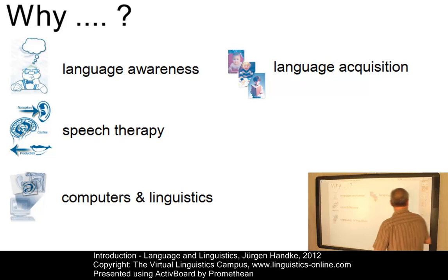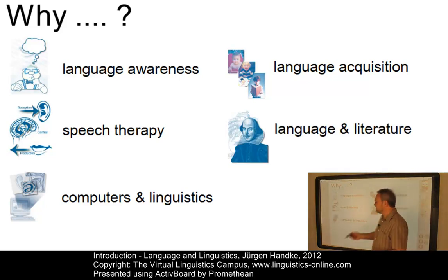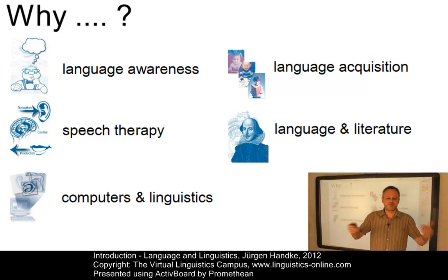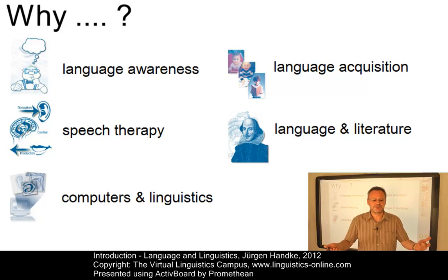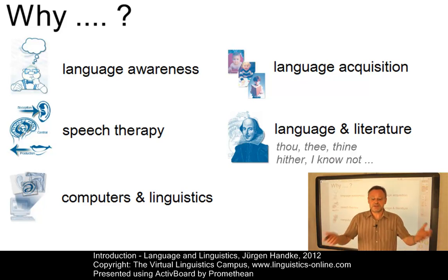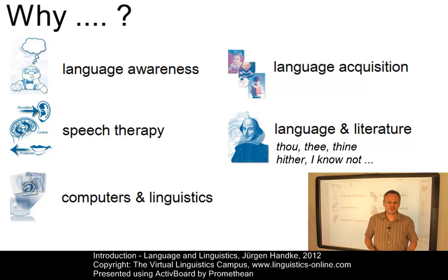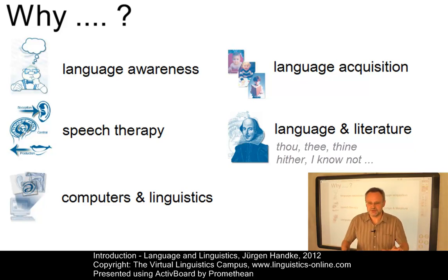Believe it or not, linguistics is really important when it comes to the analysis of literature. Shakespeare, for example, used a type of English which is completely different from ours today. When did he live? 1564 to 1618. Wasn't English different then? Yes, of course it was. And there were so many elements in English that can hardly be understood today — linguists tell you which ones.